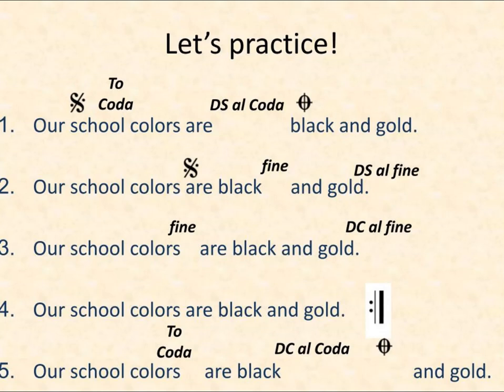Line two uses the Segno just like line one, but instead of going to the coda, we go to the Fine — just be Italian, call it 'fee-nay.' We go through the first time: 'our school colors are black and gold,' ignoring the Fine. Then back to the Segno — 'are black' — stop. So line two reads: our school colors are black and gold — are black.